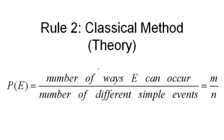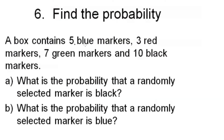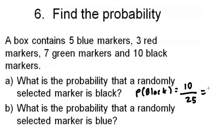Rule 2, the classical method: P(E) equals the number of ways E can occur over the number of different sample events — M over N. Example: a box contains 5 blue markers, 3 red markers, 7 green markers, and 10 black markers. The total is 25. P(black) equals 10 divided by 25, which is 0.40. P(blue) equals 5 divided by 25, which is 0.20.